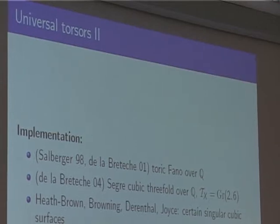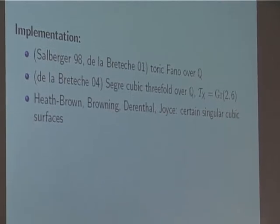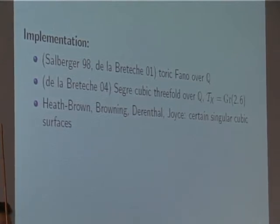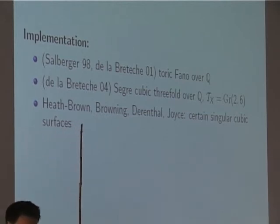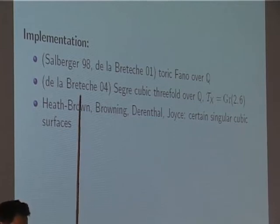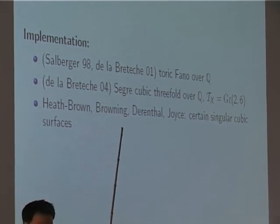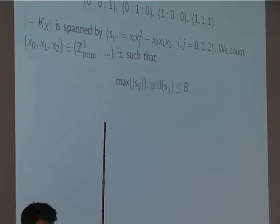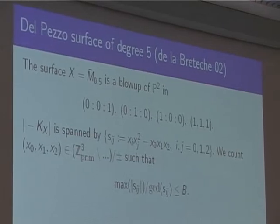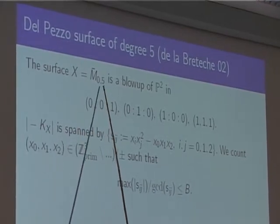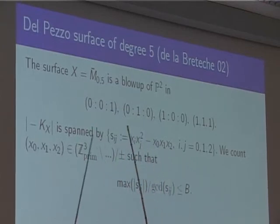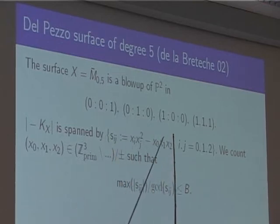So harmonic analysis techniques used for group compactifications do not apply to the Segre cubic, but the torsor technique does and gives a result — again over Q, in a substantial and quite difficult paper. More recent papers by Heath-Brown, Browning, and Derenthal consider certain singular cubic surfaces or quartic del Pezzo surfaces, write down the universal torsors via the Cox ring construction, lift rational points to these torsors, and obtain asymptotics of integral points in bounded domains via volumes.